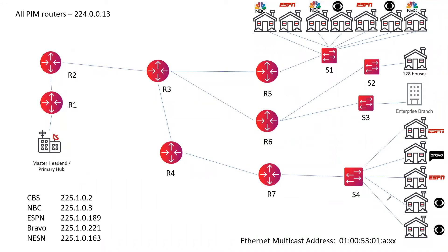The way routing works is the destination advertises itself into the network and says, I'm here if you want to talk to me. The routing protocols create a loop-free tree to that particular destination. The root of the tree is the destination, and anyone who wants to talk to that destination goes through the tree for their conversation. Routing is unidirectional, so you're always sending your traffic towards the root of the tree to the destination you want to talk to.